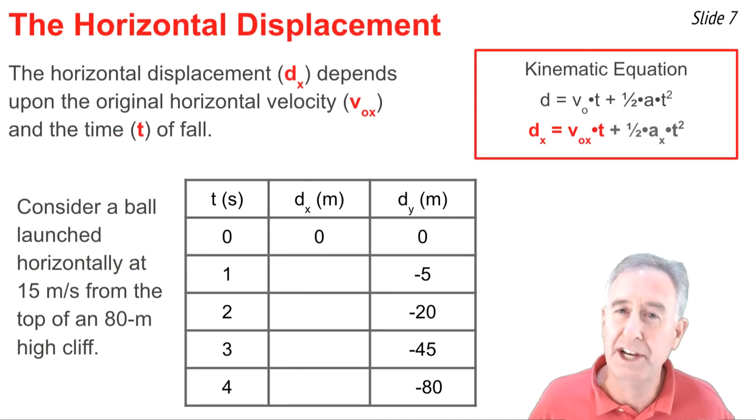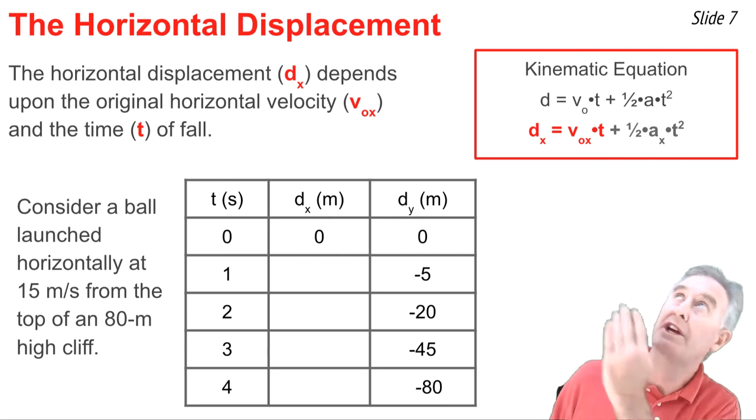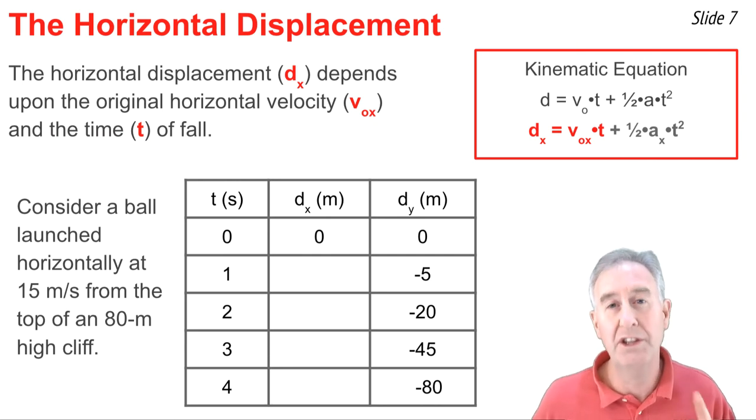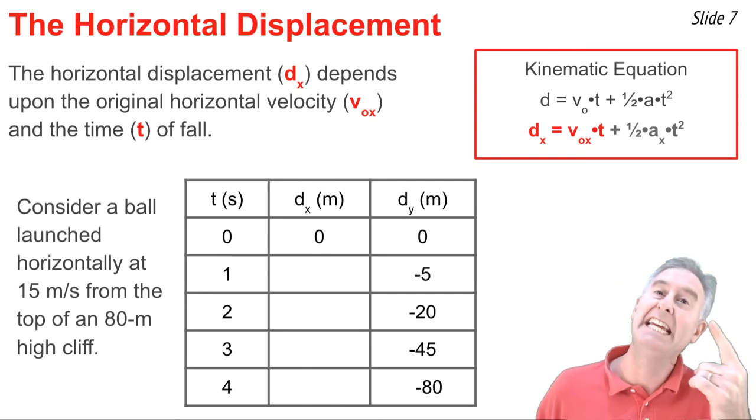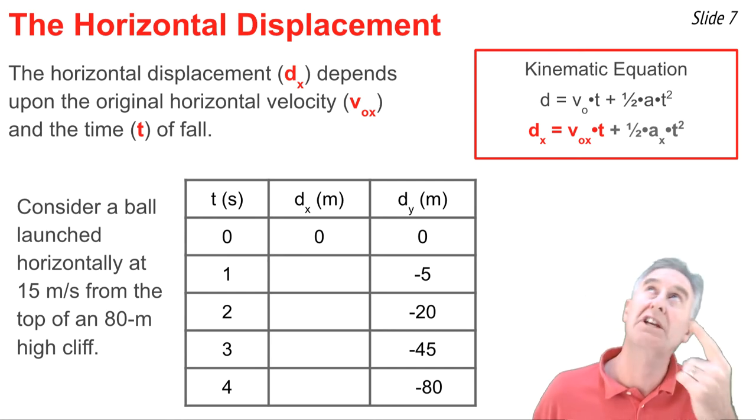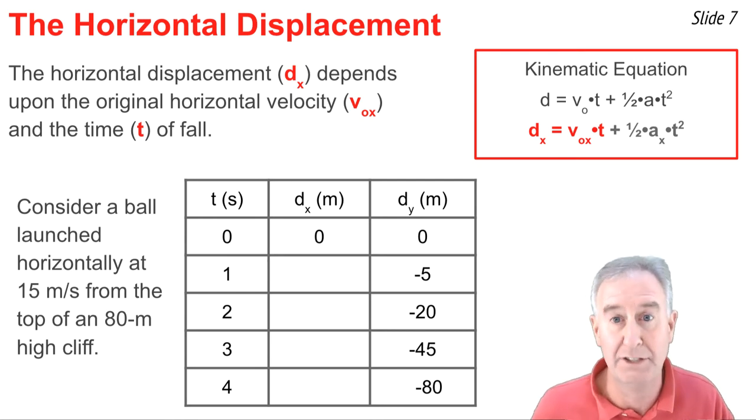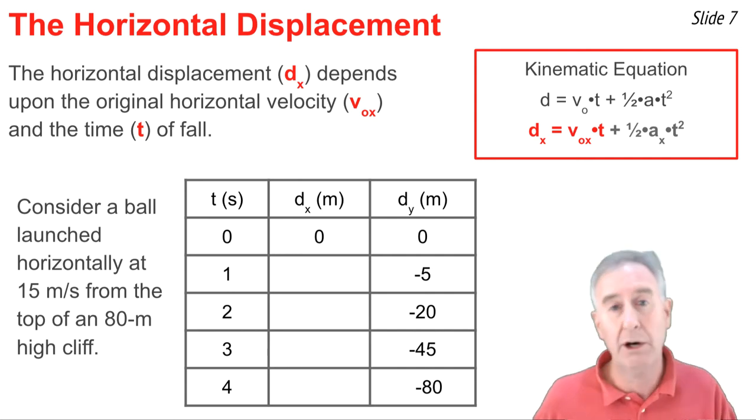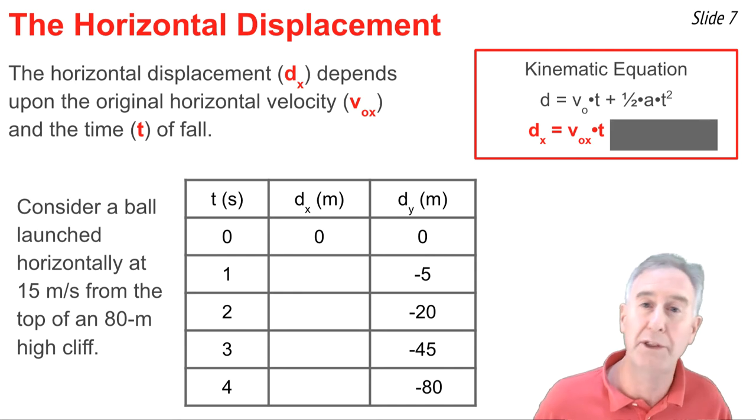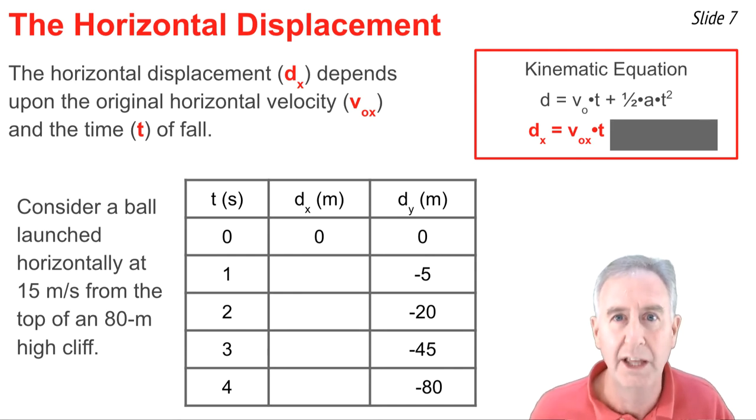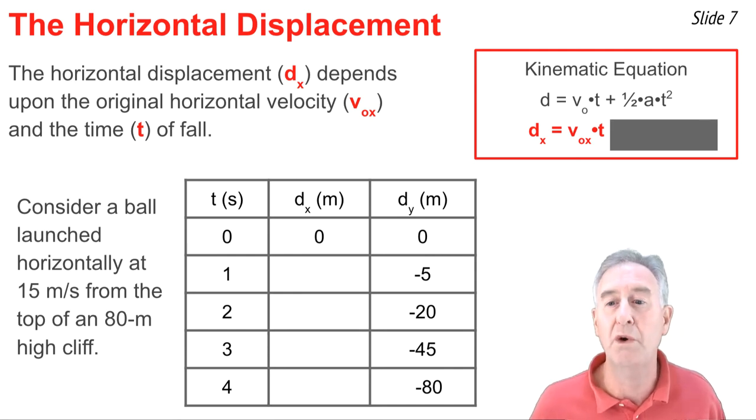When calculating the horizontal displacement of a projectile, we can use the same kinematic equation we just used, only this time we have to plug into the equation horizontal variable values. For instance, to calculate the d_x, we need to substitute v_ox values into this formula, and a_x values into this formula. Now it ends up that for a projectile, the horizontal acceleration is zero. So the second term on the right side would totally cancel out, simplifying the equation to the form d = v_ox × t.